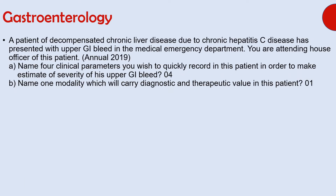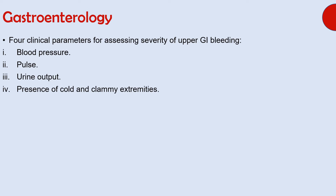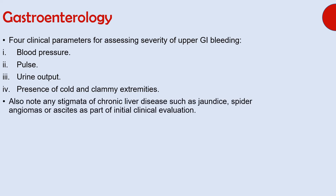Let's begin with our first question. Since the question does not ask about diagnosis, let's see the answers. The first part asked about clinical parameters by which you can assess the severity of upper GI bleed, and they include blood pressure, pulse, urine output, and presence of cold clammy extremities. Also note any stigmata of chronic liver disease such as jaundice, spider angiomas, or ascites, as this can help determine if chronic liver disease associated varices was the underlying cause.